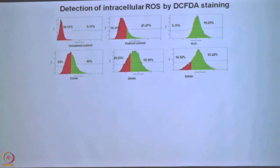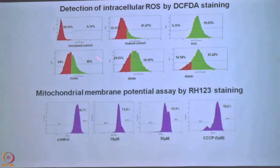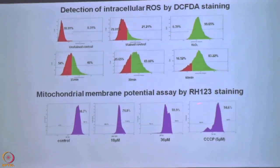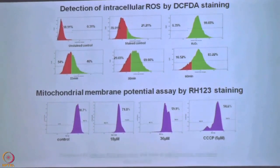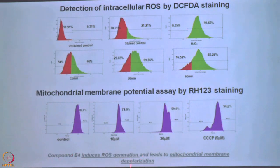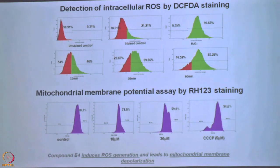Detection of intracellular ROS — we saw mitochondrial proteins up-regulated in proteomics, and ROS proteins too. With this we found it is also making sense. Mitochondrial membrane potential assay was done and we came to the conclusion that something is happening towards the mitochondrial pathway. Compound E4 induces ROS generation and leads to mitochondrial membrane depolarization. What proteomics told us — mitochondria — and the result came by other biological techniques: same. That is exactly what we need.